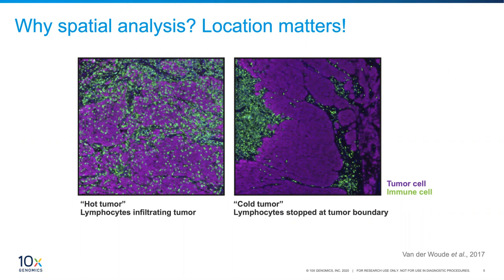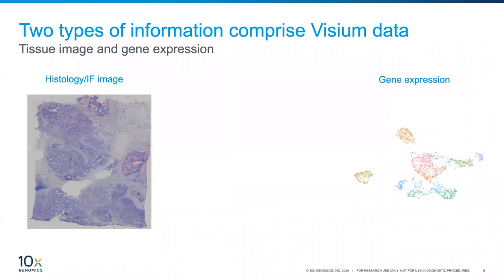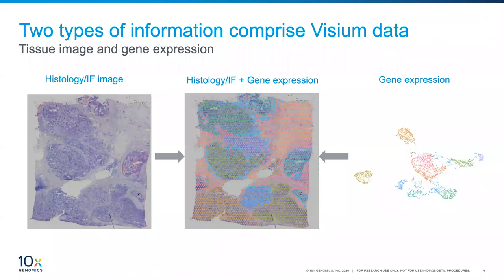Single-cell analysis can reveal differences in the stromal and immune compartments, but it's still tricky to figure out the spatial context. When you see a picture that makes it very clear why you're seeing differences in immune or cancer cell behavior, it's easy to generate a hypothesis. What Visium really does is combine two types of information: imaging—either histology or immunofluorescence—and unbiased whole-genome transcriptome data. Visium is a combination of histology and gene expression, merging pathology with genomics.